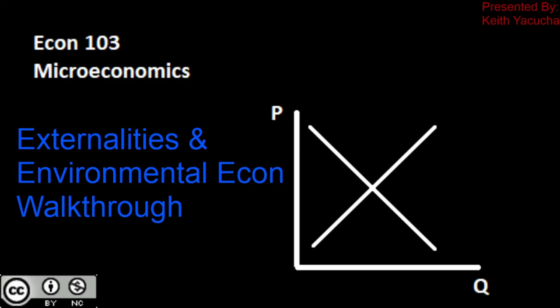Welcome back to Econ 103, Introduction to Microeconomics. In this video, we're going to be taking a look at negative production externalities and environmental economics. We're going to be walking through a specific problem. This assumes you've already watched the videos on externalities, taxes, and environmental econ.